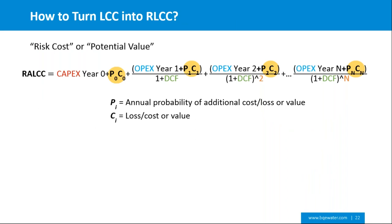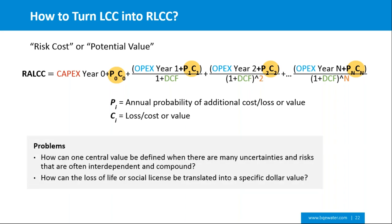How do we turn life cycle costs into risk-adjusted life cycle costs? Mathematically it's straightforward: these deltas are shown as a product of probability times a loss or value generated every year of the life cycle being considered. The challenge is arriving at one central value for each year when the types of uncertainties and risks are constantly changing, some interrelated and compounding, others independent. It's also difficult to translate a loss of social license or loss of life into a dollar value in the life cycle cost.